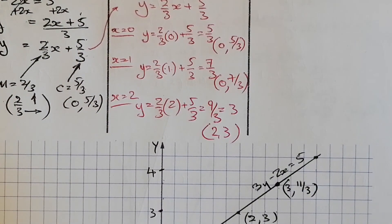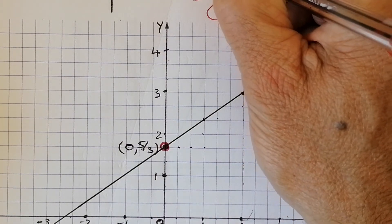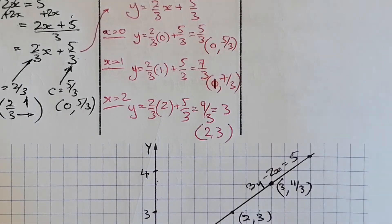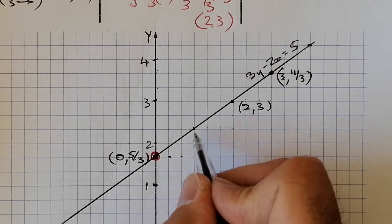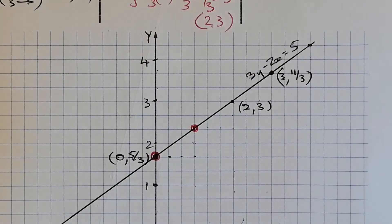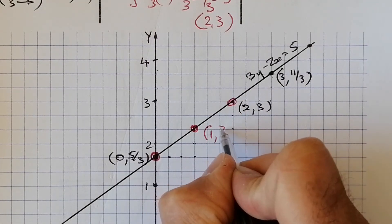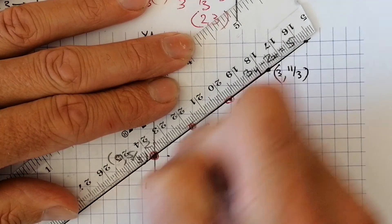I note I made a small error earlier — the second point has x equals 1, not 0. So that's (1, 7/3): going 1 along and 7 thirds up. And (2, 3): 2 along and 9 thirds up. Plotting all three points and drawing the straight line through them completes Method 2 for this equation.